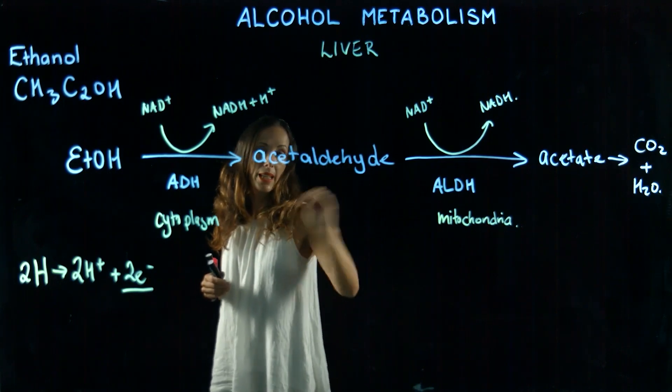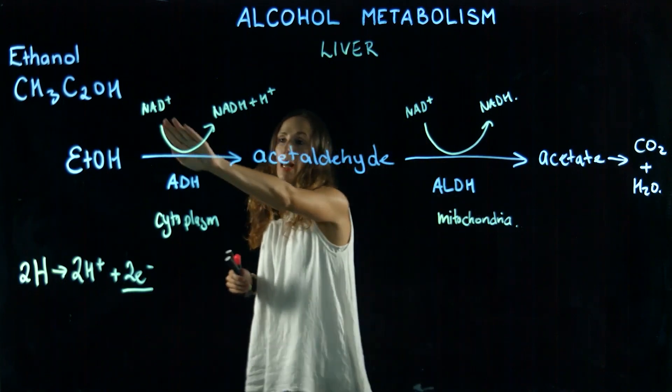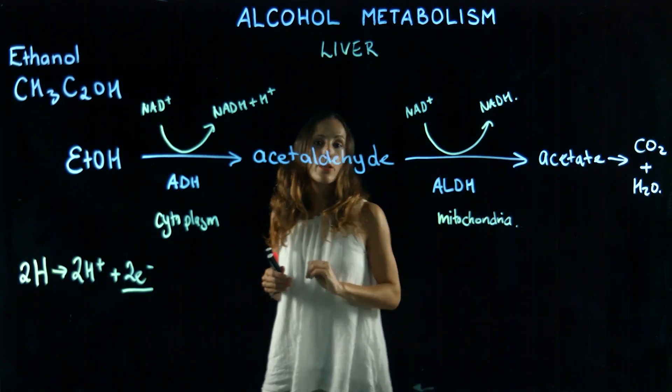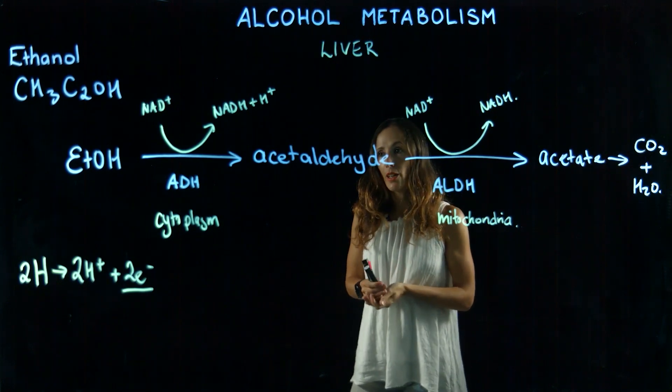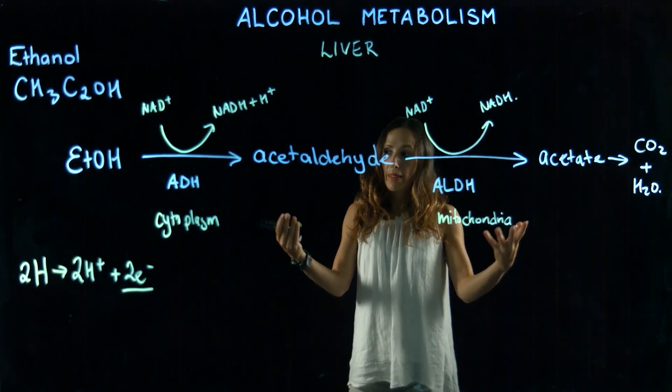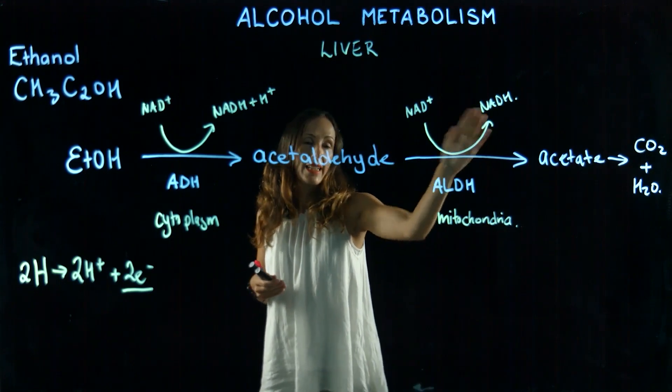We have two enzymes that carry this out. If you look at this reaction, we need a supply of NAD+, so NAD+ is what limits the availability of how the reaction can occur. We're also producing NADH.